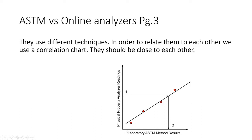There are significant differences technologically, and in terms of accuracy, when we compare lab standards to online analyzers. You can't say they're exactly the same, but they are relatively similar, and we can take our field measurements from online analyzers and compare them to lab standards through a process called correlation. Correlation means we take our laboratory results on one axis and our online analyzer points on another axis.